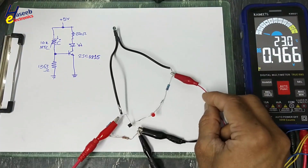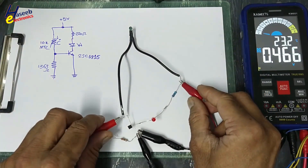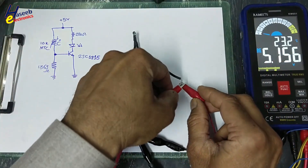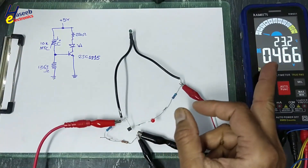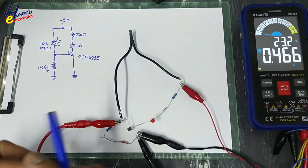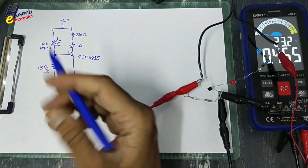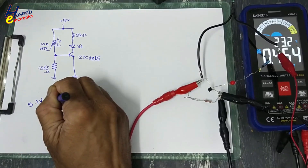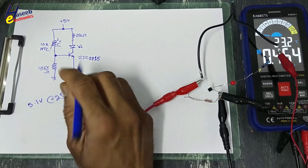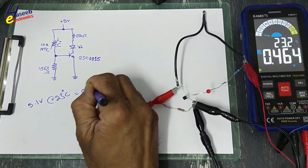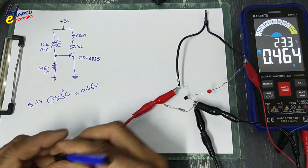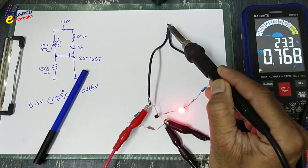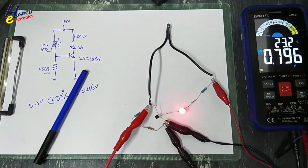When we use a 5.1V supply, this NTC provides 0.46V when ambient temperature is 25 degrees Celsius. At 5.1V and 25°C, we are receiving 0.460 to 0.464V. When temperature increases and the LED is fully bright, we get 0.7V to 0.8V.